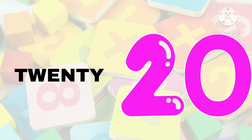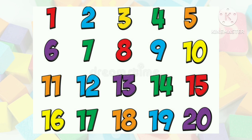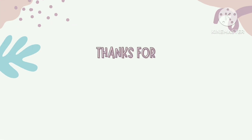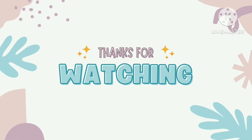Let's tell the numbers 1 to 20 together. 1, 2, 3, 4, 5, 6, 7, 8, 9, 10, 11, 12, 13, 14, 15, 16, 17, 18, 19, 20.